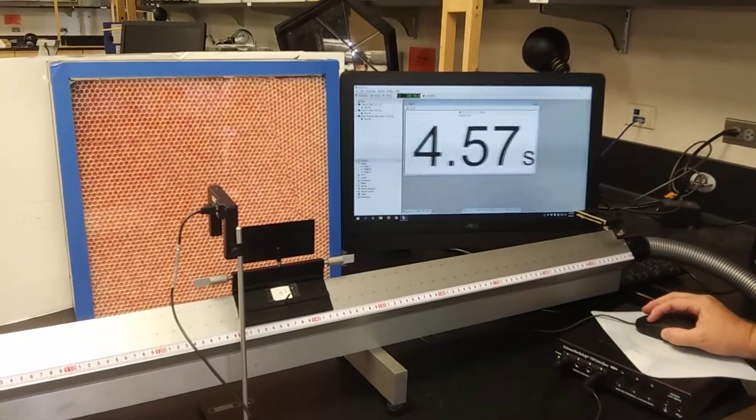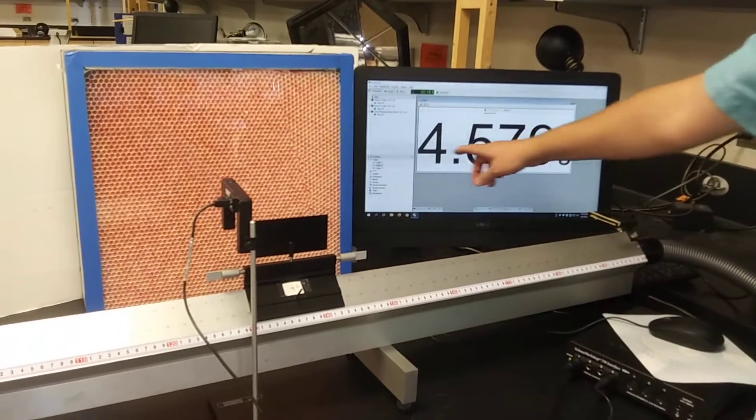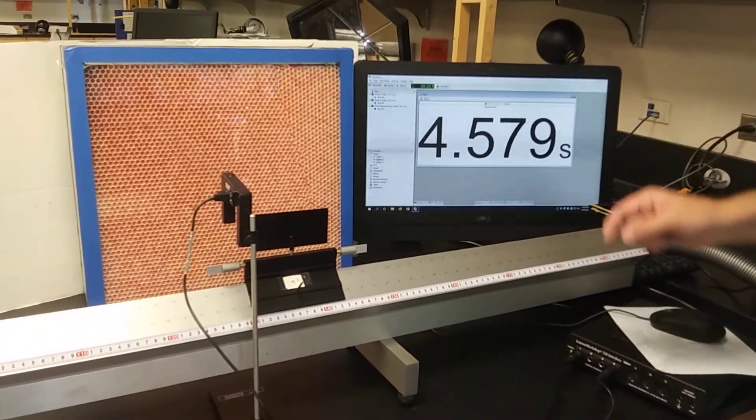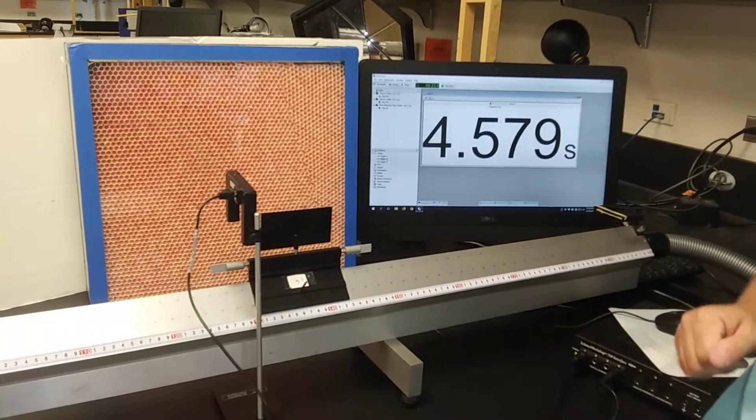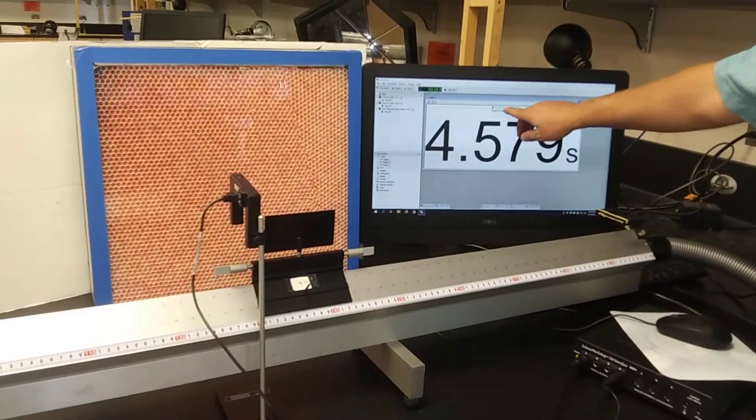It took 4.579 seconds for this to cross through that gate. And so, this is called a time in gate measurement.